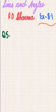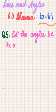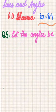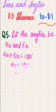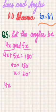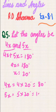Question 5: Two supplementary angles are in the ratio 4:5. Find the angles. Let the angles be 4x and 5x. Since supplementary angles sum to 180 degrees: 4x plus 5x equals 180, so 9x equals 180, giving x equals 20 degrees. Therefore 4x equals 80 degrees and 5x equals 100 degrees. The required supplementary angles are 80 and 100 degrees.